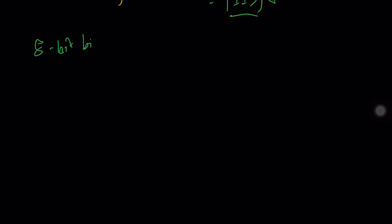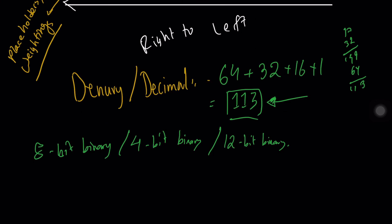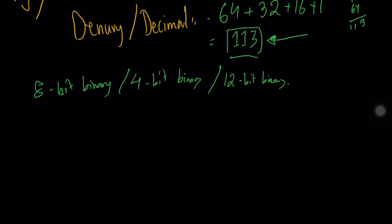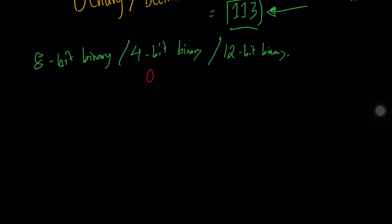Now, what does it mean when we say 8-bit binary or 4-bit binary or 12-bit binary? This simply refers to how many digits of binary there are. An example of 4-bit binary is 0011 — that's four digits. 8-bit binary has eight digits, and 12-bit binary has twelve digits.